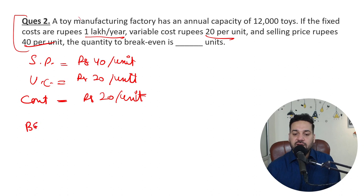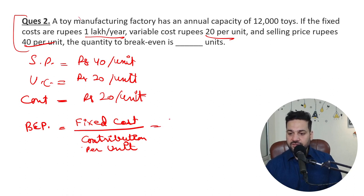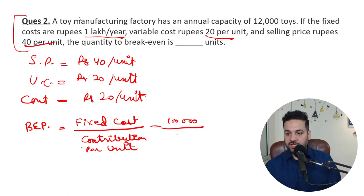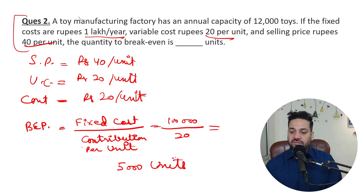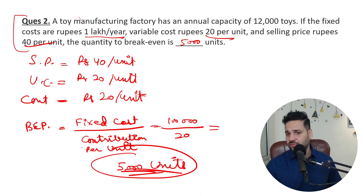Now you need to calculate the break-even point. Break-even point is fixed cost divided by contribution per unit. Fixed cost is 1 lakh rupees divided by contribution per unit of 20 rupees. Break-even point is 5,000 units. If the answer was asked in rupee amounts, you would multiply by the sales price.